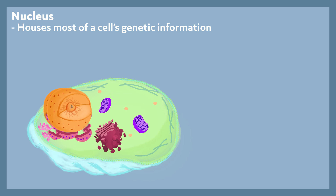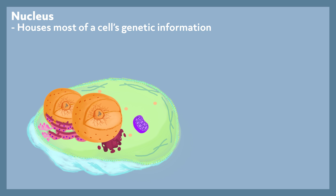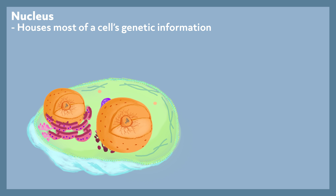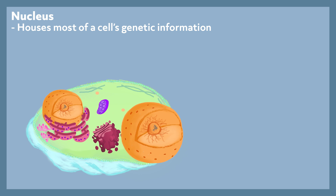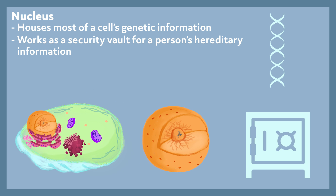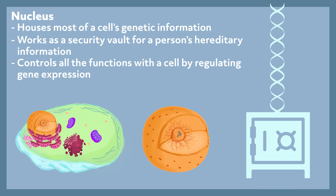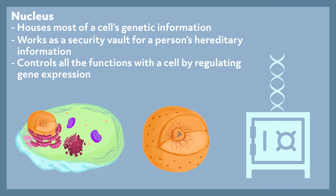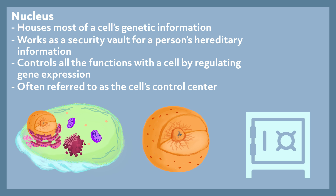Nucleus. The nucleus houses most of a cell's genetic information. DNA is packed into the nucleus, along with several other proteins, which form chromosomes. The nucleus works as a security vault for a person's hereditary information, but it also controls all of the functions within a cell by regulating gene expression. The nuclear genome promotes cellular function, and the nuclear pores within the nuclear membrane selectively channel necessary proteins and RNA from the cytoplasm into the nucleus.